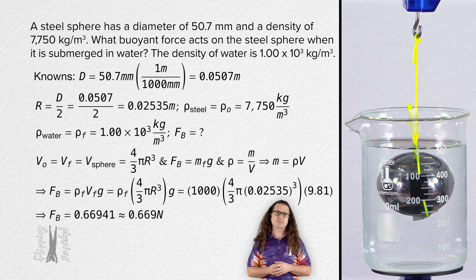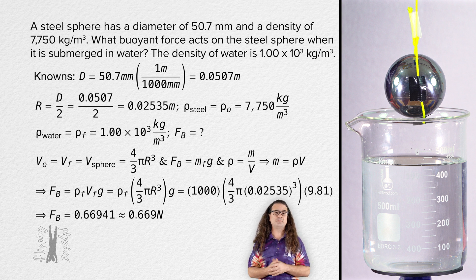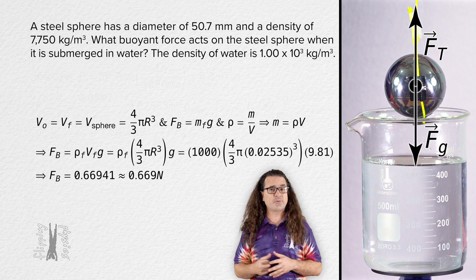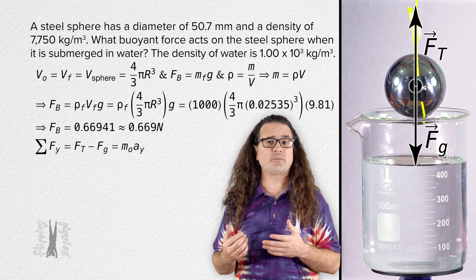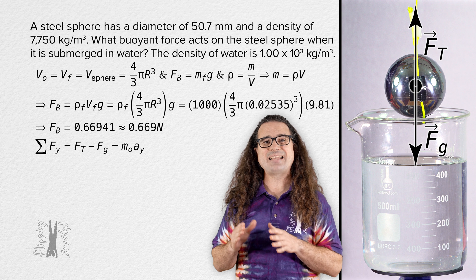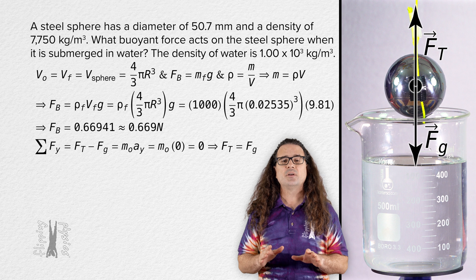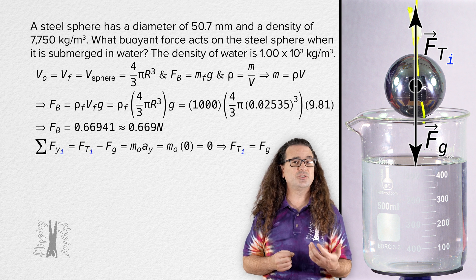Now let's take some measurements. Let's start with the steel sphere hanging from a string before we lower it into the water. Bobby, what does the free body diagram of the forces acting on the sphere look like right now? The force of gravity acts down and the force of tension acts up. So when we sum the forces in the y direction, we get the force of tension minus the force of gravity equals the mass of the object times the acceleration in the y direction. Because the sphere is at rest, the acceleration is 0 and the force of tension equals the force of gravity. This is the initial position of the steel sphere, so let's identify this as the initial tension in the string.